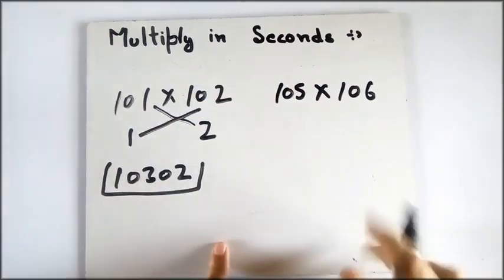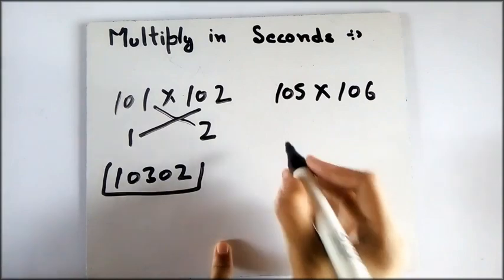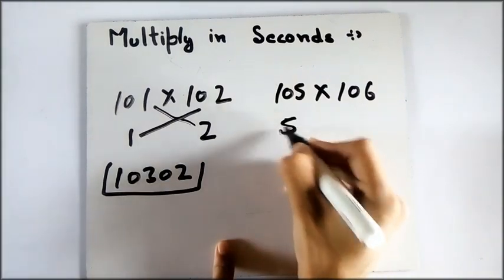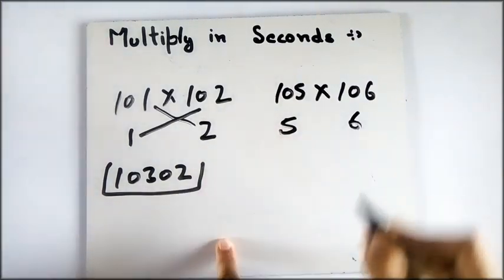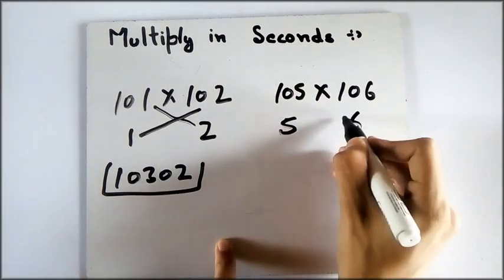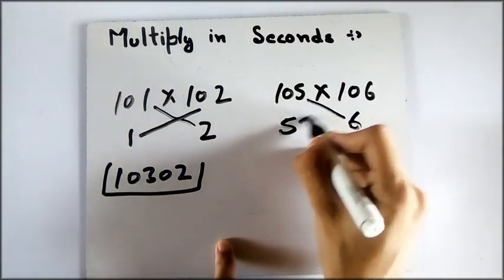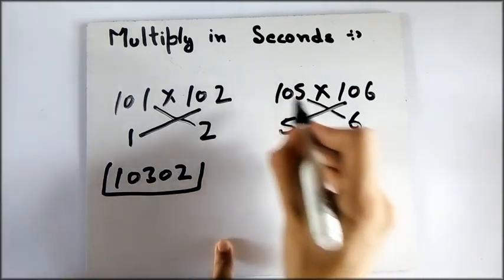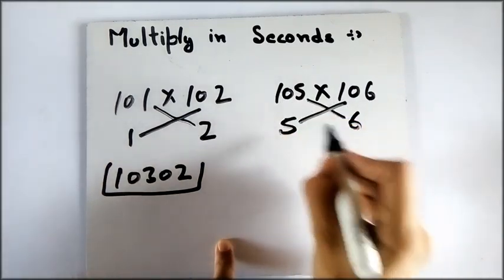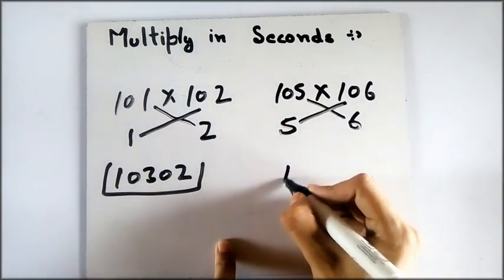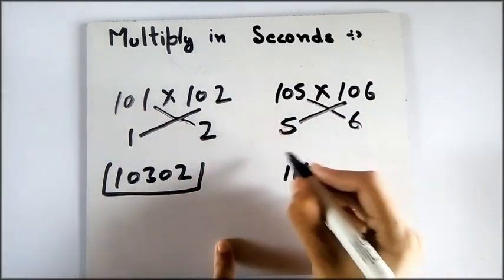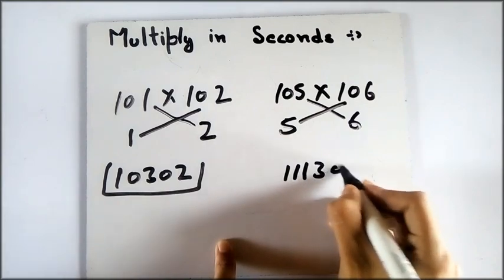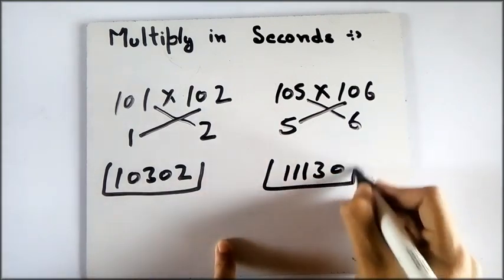Now take a look at this one. It is 5 greater than 100 and it is 6 greater than 100. We will do this: 105 plus 6 is 111, and 6 times 5 is 30. So this is our answer.